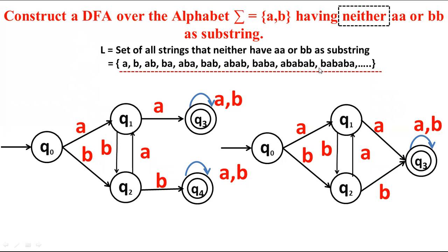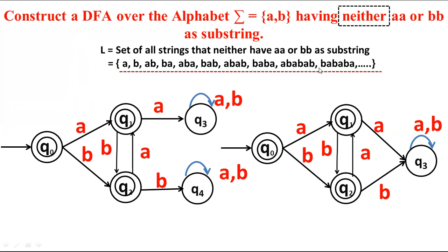By doing minor modifications to the DFA, we can construct a machine with neither 'aa' nor 'bb' as a substring. What we need to do is convert the final states to normal states and the normal states to final states. So we swap accepting and non-accepting states. Our DFA accepting strings with neither 'aa' nor 'bb' as a substring is now ready.